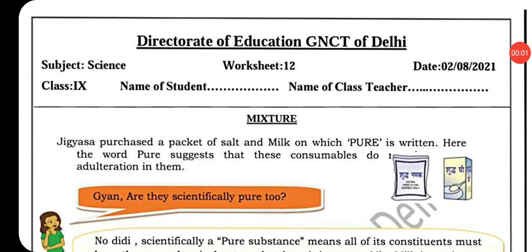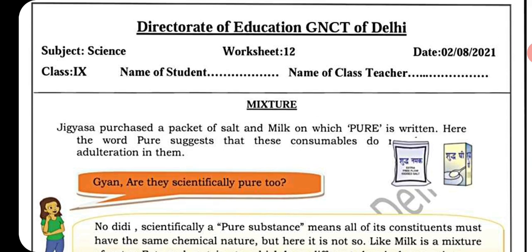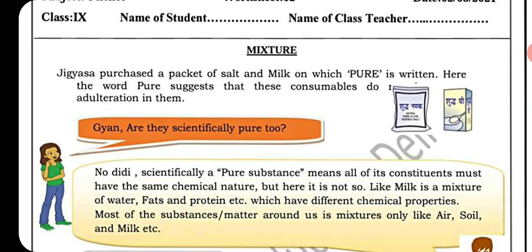Hello dear students, today we will discuss worksheet number 12 of class 9. If you purchase a packet of salt and milk on which 'pure' is written, the word 'pure' suggests that these consumables do not have adulteration in them. But can they be considered scientifically pure?